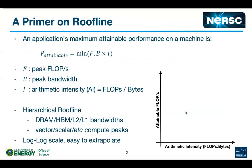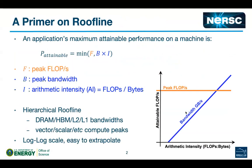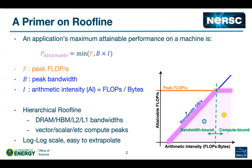A 20-second intro to roofline: when thinking about performance bounds, the peak flops bound may not always be the relevant one — for example, when your code is bandwidth bound, you never reach peak flops. Roofline says you're bound by the combination of the two: in a bandwidth-bound region, you're bounded by the product of peak bandwidth and arithmetic intensity; in a compute-bound region, you're bounded by peak flops. The plot is log-log scale, making it easier to extrapolate what happens when you double flops or bandwidth.